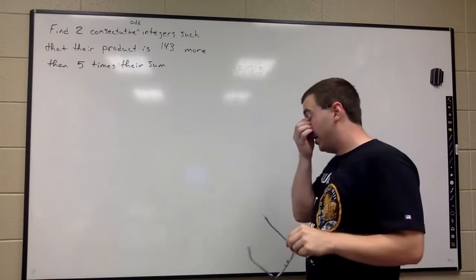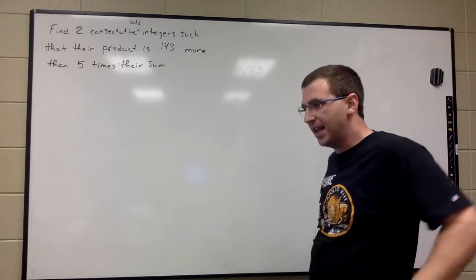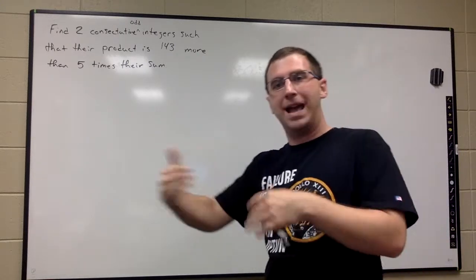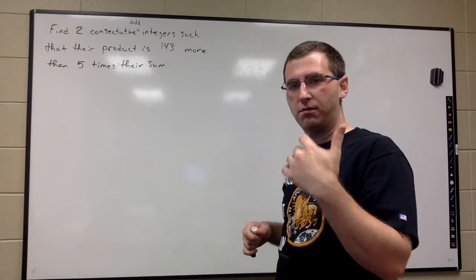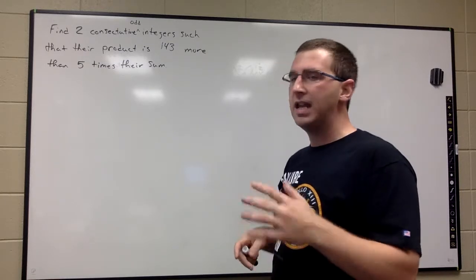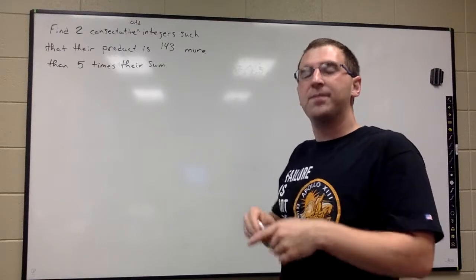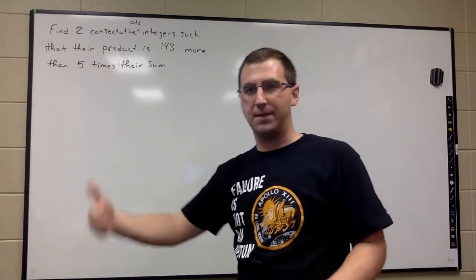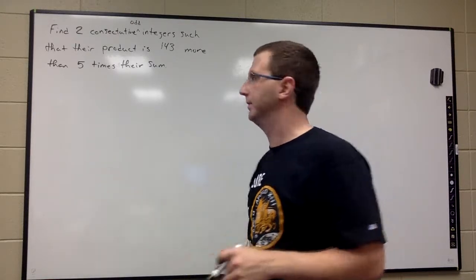What does 'consecutive' mean? Consecutive numbers are like one, two, three, four — that pattern. Consecutive odd integers — if you go back to elementary school, odd numbers are one, three, five, seven, nine, and so on. The odd numbers are right next to each other; that's what the word 'consecutive' means.